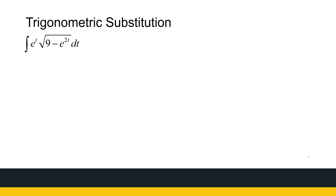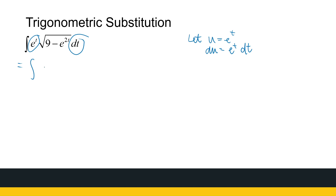In this case, we've got the integral of e to the power t times the root of 9 minus e to the power 2t. Now, at first glance, this does not look like any of the formats of the trig substitution. But notice that e to the power 2t is just e to the power t squared, so we've got a square in there. If we make a straightforward substitution, let u equal to e to the power t, then du is e to the power t dt. And I've got an e to the power t dt there, so this will become the integral of the root of 9 minus u squared du. And all of a sudden, it looks exactly like the trig integrals we've seen before.